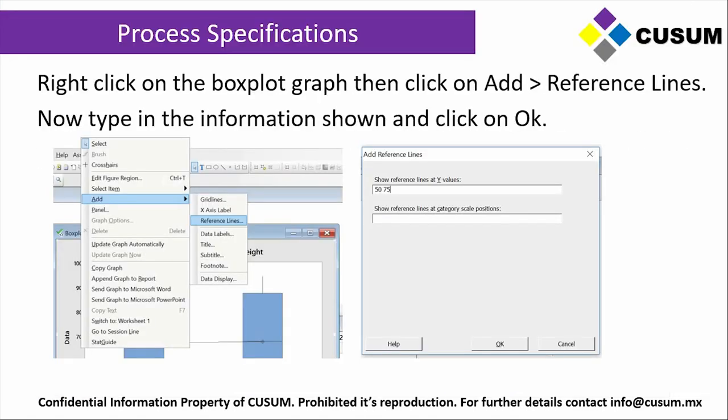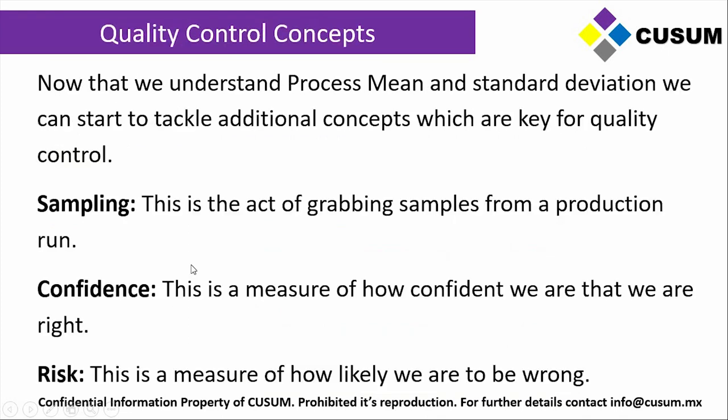Now that we understand process specifications, we can tackle additional concepts key for quality control. The next three main concepts are sampling, confidence, and risk. In later modules we will be using Minitab's capability indexes and capability analysis to execute CPK and PPK studies, so we need to understand what a process specification is before we can work with those tools.